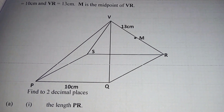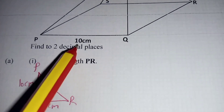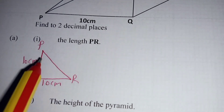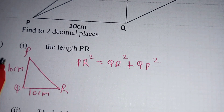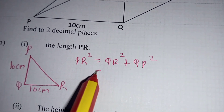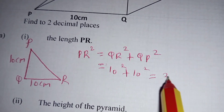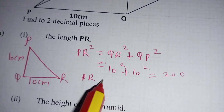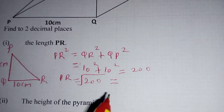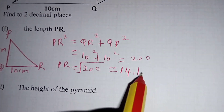PR is the hypotenuse, so we extract a small rectangle. Since this is a square, PQ is 10 and QR is also 10. By the Pythagorean theorem, PR equals the square root of QR squared plus QP squared, which is the square root of 10 squared plus 10 squared, equal to the square root of 200, which is 14.14 centimeters.